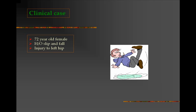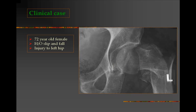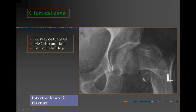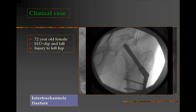Our first clinical case is of a 72-year-old female patient who had a history of slip and fall and injured her left hip joint. The x-ray shows a fracture through the intertrochanteric region from the greater trochanter extending into the lesser trochanter. This is an intertrochanteric fracture requiring open reduction and internal fixation, where the fracture is reduced into as close an anatomical position as possible and fixed with a screw extending through the trochanteric region up the neck of the femur into the head, and a plate fixed with screws along the lateral shaft of the femur.